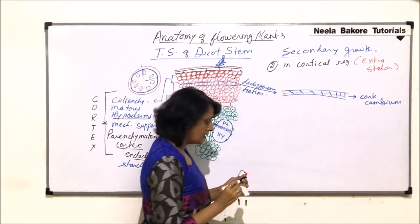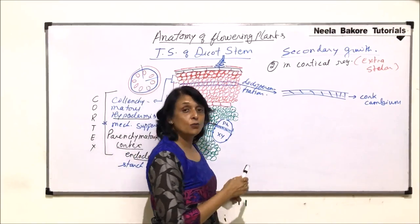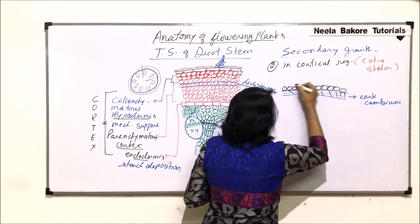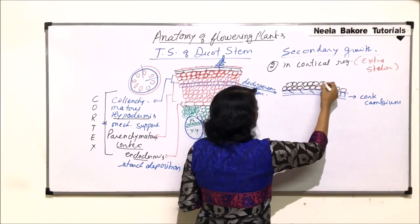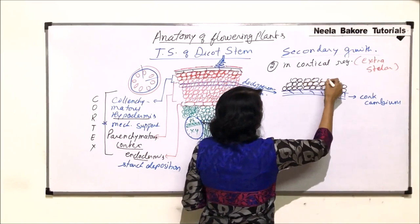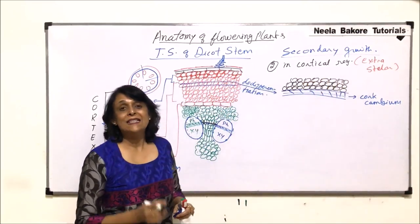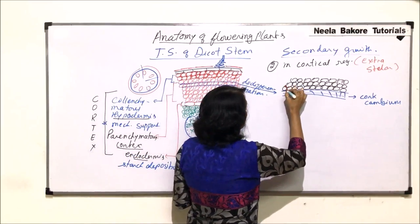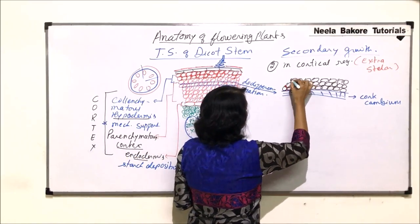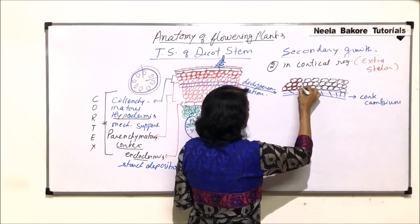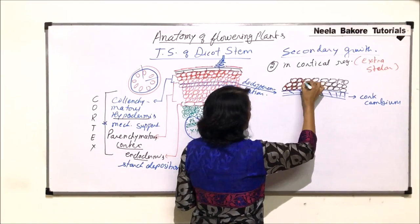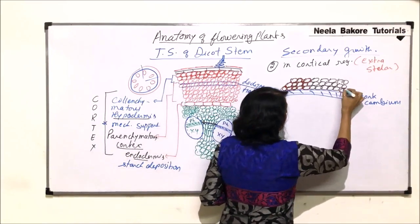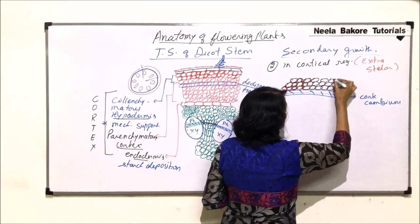Cork cambium produces new cells on the outer side. These new cells are parenchymatous cells, loosely arranged. After they are formed, some cells undergo deposition of suberin. Suberin gets deposited in the cell wall.